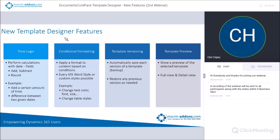The next piece is conditional formatting. It's kind of an extension of our tool that allows you to create complex conditions — this lets you take those conditions and apply formatting to content based on them. It uses MS Word styles, or you can create your own custom Word styles. Some examples would be changing text color, font, size, indenting, justification, and you can also use it to change table styles as well.